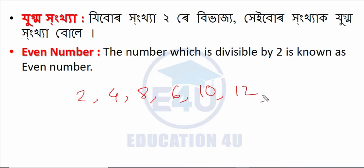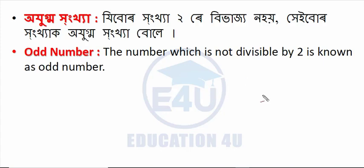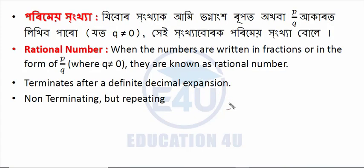A number which is divisible by 2 is known as an even number. The number which is not divisible by 2 is known as an odd number. If a number is not divisible by 2, then it is known as an odd number.